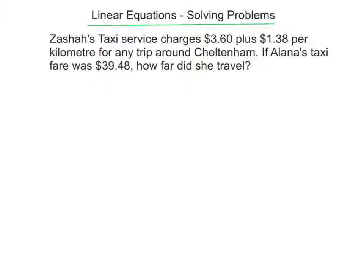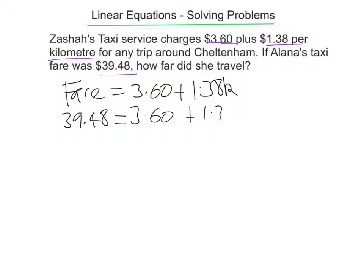In this next question, we've got Zash's taxi service, which charges $3.60 for the flag fall, that's before you can even go anywhere, and $1.38 per kilometre for any trip around Cheltenham. Alana's taxi fare is $39.48, so we want to work out how far she travelled. So let's start off with looking at how much a fare costs. A fare costs $3.60 plus $1.38 by the kilometres. So I'm letting K equal the number of kilometres travelled. The fare for Alana is $39.48, so that has to equal 3.60 plus $1.38k.